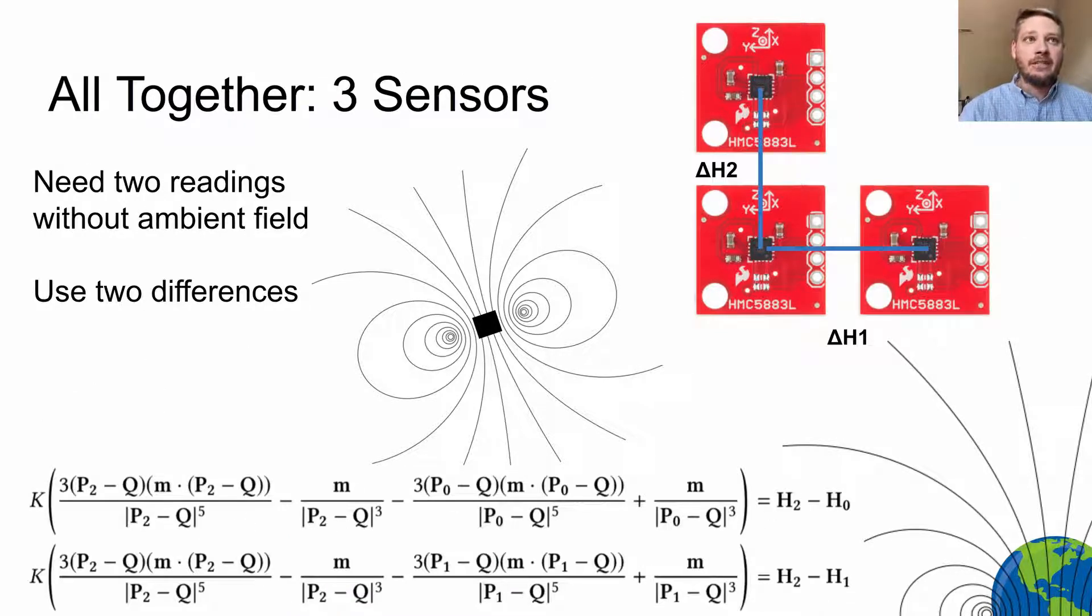Bringing this all together, we need three sensors. We can use two difference readings to get rid of the ambient field and plug those into the previous equations. Now we have this crazy equation at the bottom.